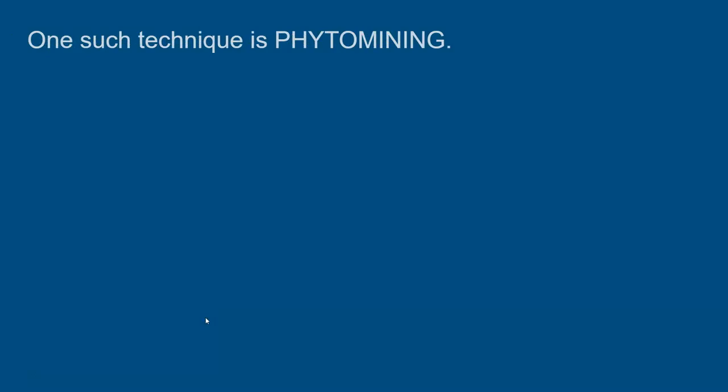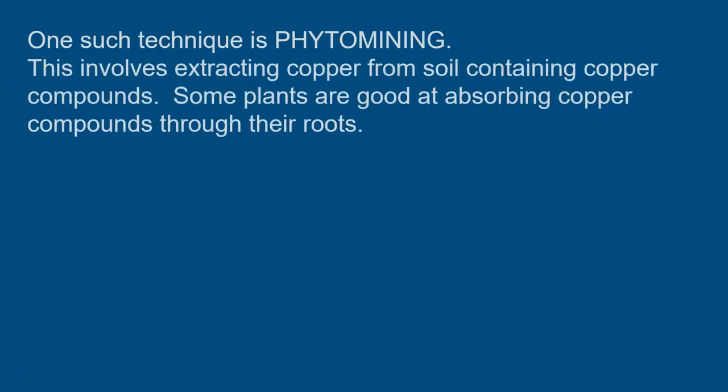One such technique we use is known as phytomining. This involves extracting copper from soil and the soil obviously has to contain copper compounds. Some plants are particularly good at absorbing copper compounds through their roots and in fact if we were still in school you'd be doing a practical where you were extracting copper from red cabbage.